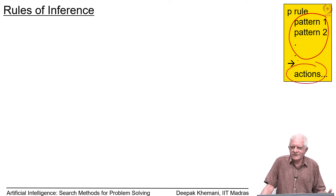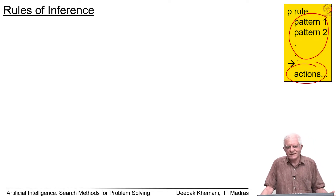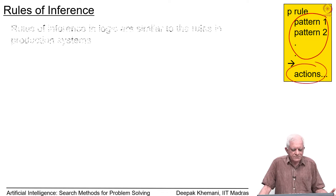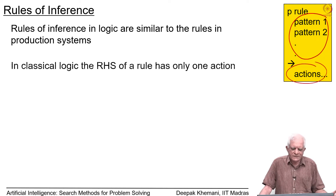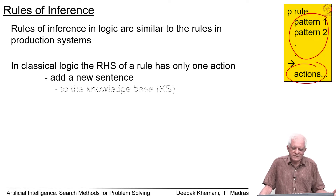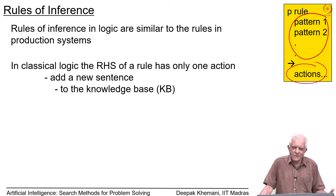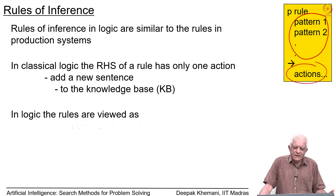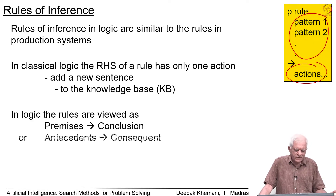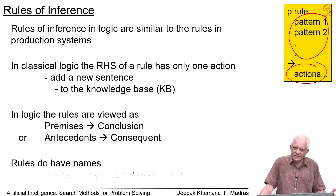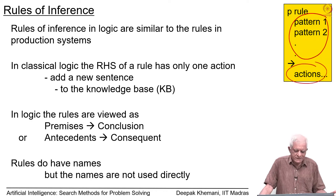Patterns are like antecedents in logic, and actions in classical logic are like add actions or make actions. Rules of inference in logic are similar to the rules in production systems. In classical logic, the right-hand side of the rule has only one action, which is to add a new sentence to the knowledge base. When we talk about rules in logic, we see it as an association between premises and conclusion, or antecedents and consequent.